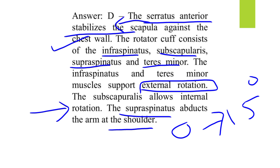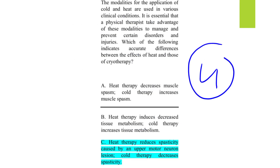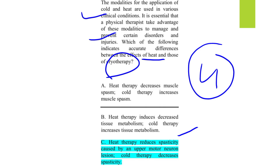MCQ number four concerns modalities of cold and heat application in clinical conditions. The question asks which option accurately describes the difference between heat and cryotherapy. Heat therapy reduces spasticity caused by upper motor neuron lesions. In upper motor neuron lesion there is increased spasticity, and heat therapy reduces this spasticity.